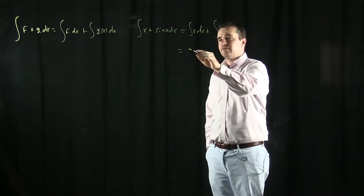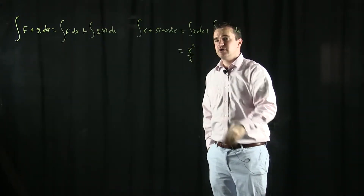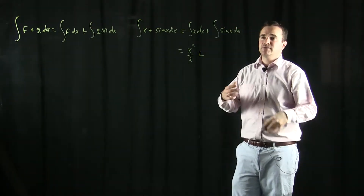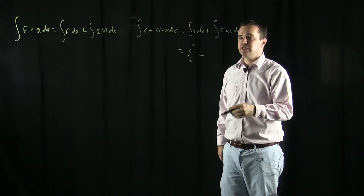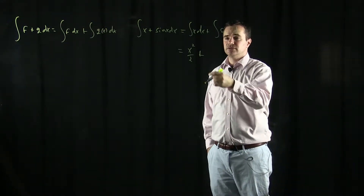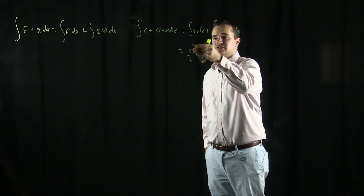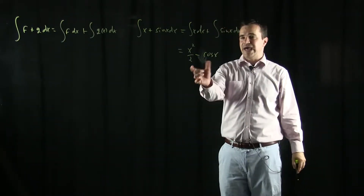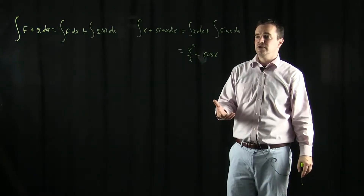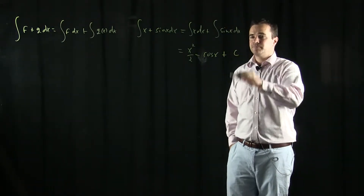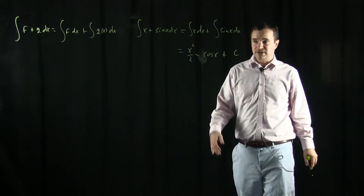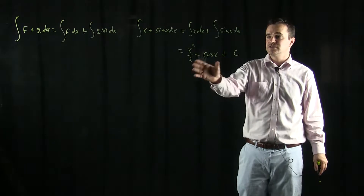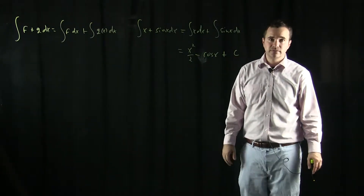The anti-derivative of x is going to be x²/2 plus some constant. And the anti-derivative of sin(x) — I'm looking for a function whose derivative equals sin(x) — that's going to be negative cosine. So instead of writing plus negative cosine, I'll just write minus cosine of x. I could add any other constant, and instead of writing c₁ and c₂, since they're all arbitrary constants, you just collect them together and write a single constant c.